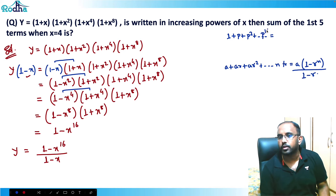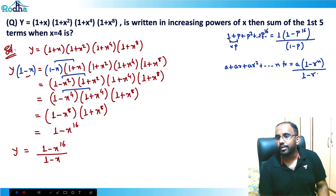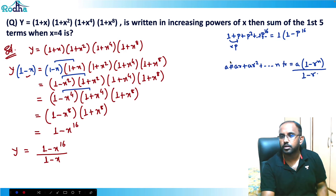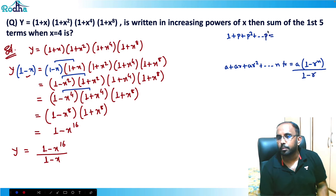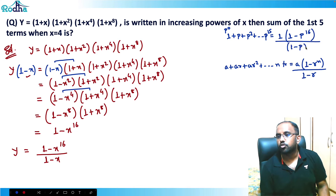So we need 1 + p + p² + ... + p¹⁵, which gives 16 terms (from p⁰ to p¹⁵). The sum equals 1·(1 - p¹⁶) / (1 - p). This confirms that y = (1 - x¹⁶) / (1 - x) corresponds to a 16-term GP.